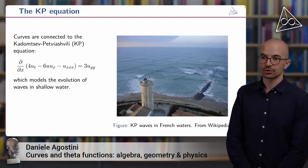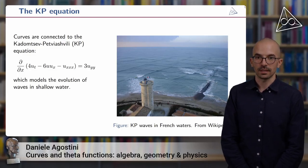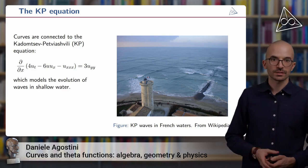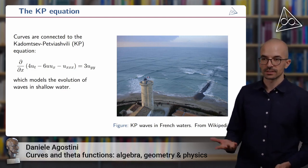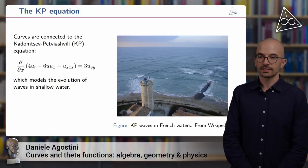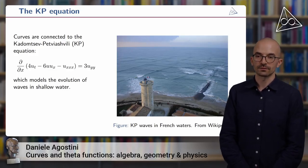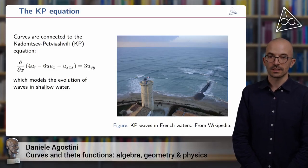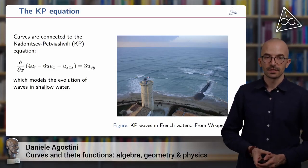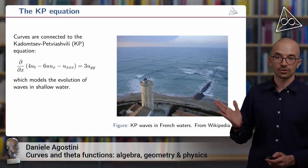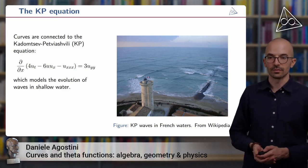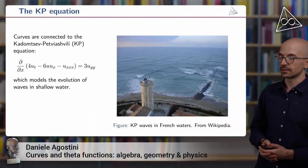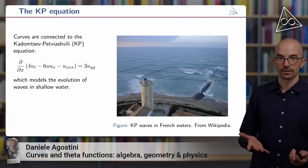It is a generalization to two dimensions of the famous KdV equation. So this is an equation that is very important to mathematicians because it has very important properties, but it's also useful to practitioners. For example, here in the picture taken from Wikipedia you can see actual water waves off the coast of France, and it turns out that such a configuration of waves can be described effectively from the KP equation. So this is a topic both in mathematics and in the real world.